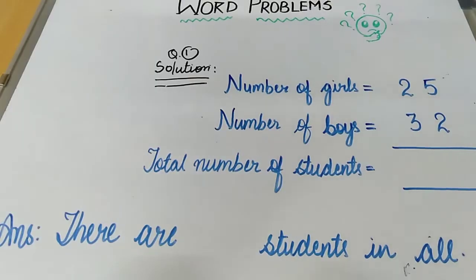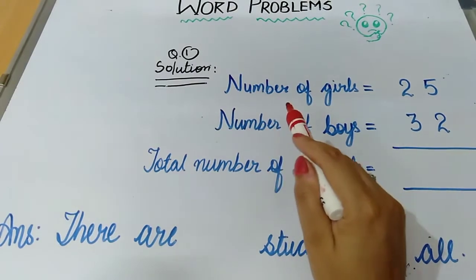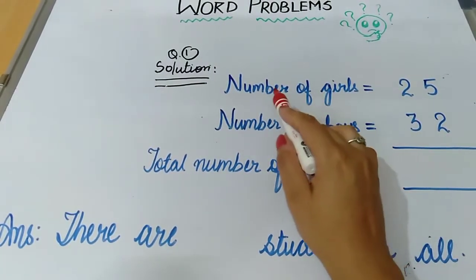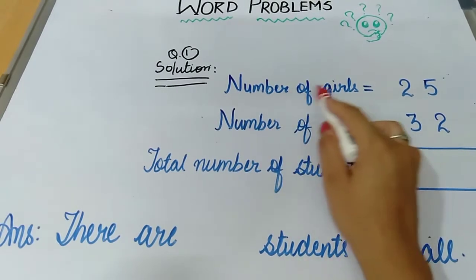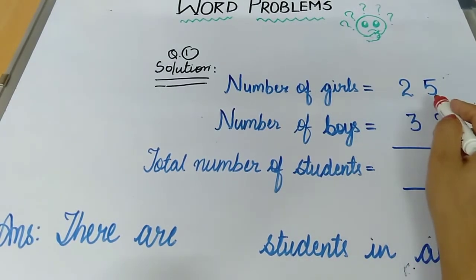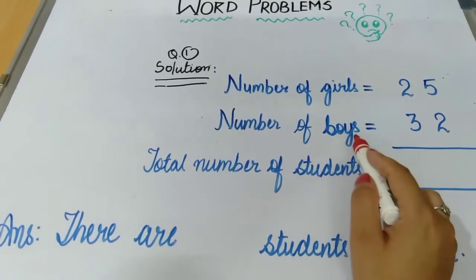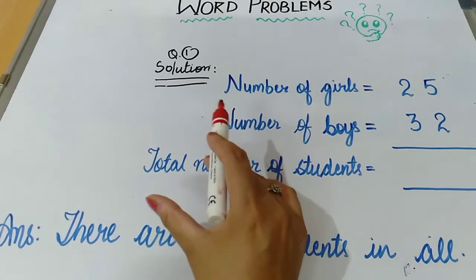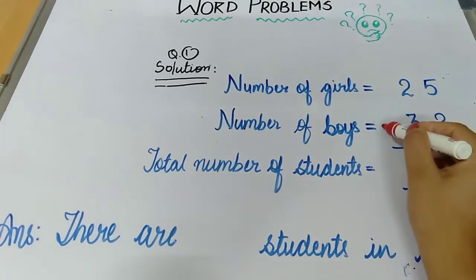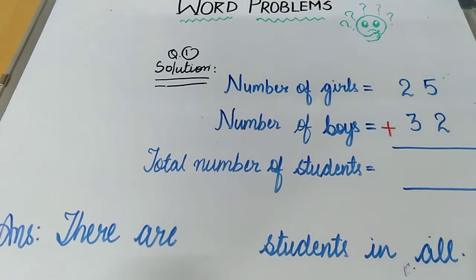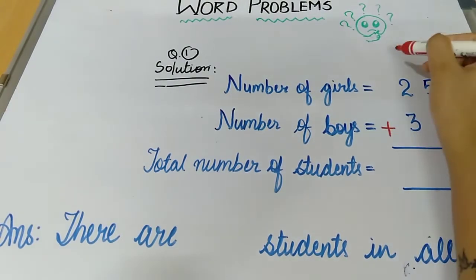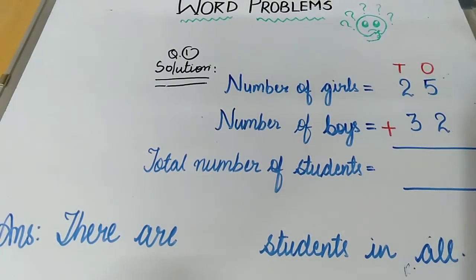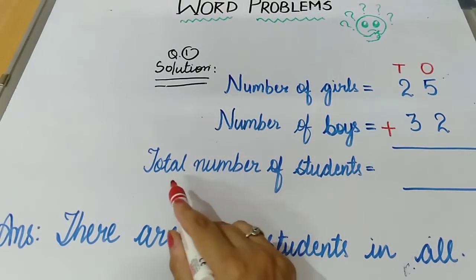You have to write all the information given in the question like this: number of girls = 25, number of boys = 32. These are given. Now total is asked — whenever total is asked, we will add. 'In all' is asked, so we will add. You will write the place value columns — hundreds, tens, and ones — and add the total number of students.